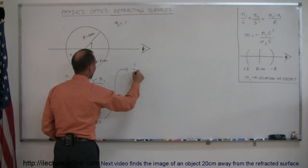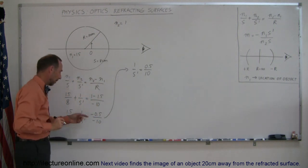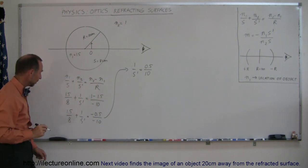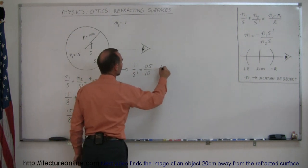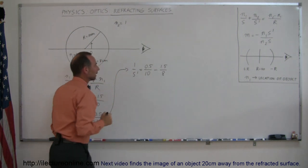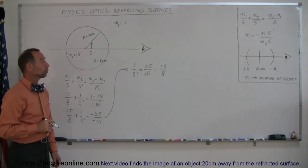So we have 1 over s prime is equal to 0.5 over 10, because negative divided by negative is positive, and then we have a minus 1.5 over 8. To combine those, we need a common denominator, and it looks like 40 would do the trick.